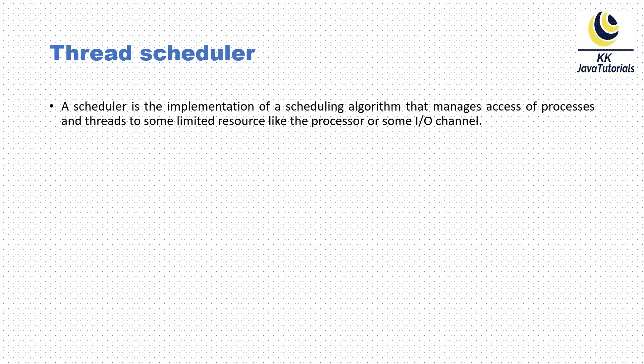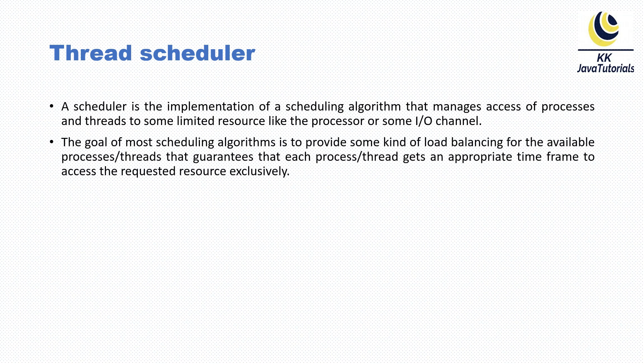A thread scheduler is the implementation of a scheduling algorithm that manages access of processes and threads to some limited resource, like a processor or some input/output channel. The goal of most scheduling algorithms is to provide some kind of load balancing for the available processes and threads, guaranteeing that each process or thread gets an appropriate time frame to access the requested resource exclusively.